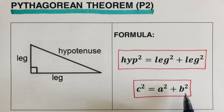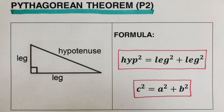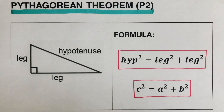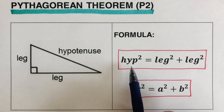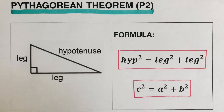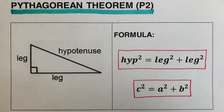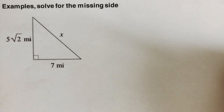They're pretty much the same thing. But if we use the letters a, b, and c, and some textbooks don't label the sides that way, we'll have trouble knowing which value goes where. So I wrote the general formula here: hypotenuse squared equals leg squared plus leg squared.